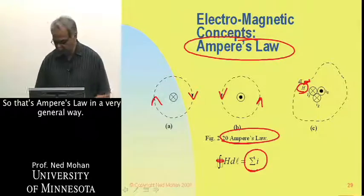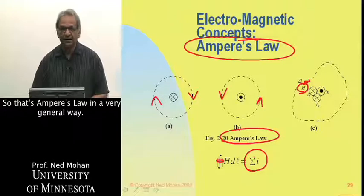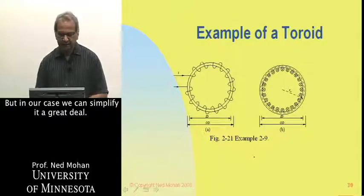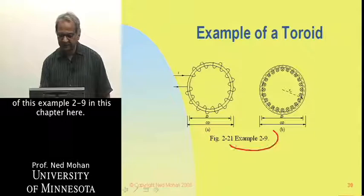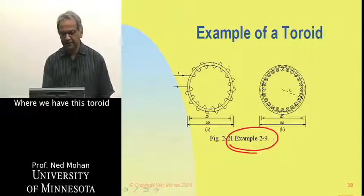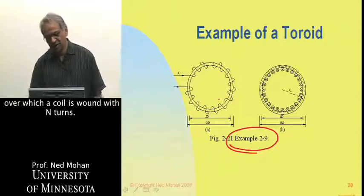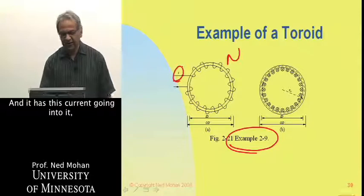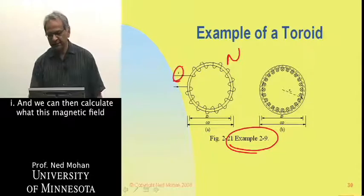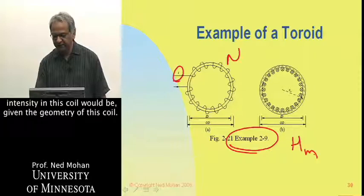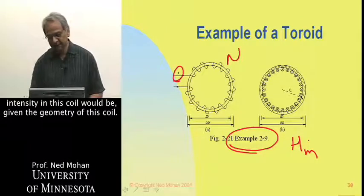That is Ampere's law in a very general way, but we can simplify it greatly. This is done by example 2-9 in this chapter, where we have a toroid over which a coil is wound with N turns, carrying current I. We can then calculate what the magnetic field intensity in this core would be given the geometry of the core.